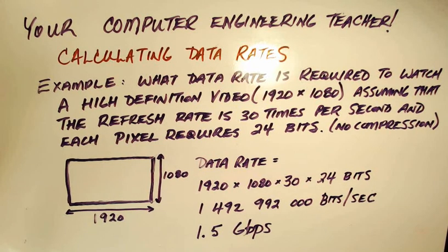So in order for this high definition video, this many pixels at a refresh rate of 30 times per second, remembering each pixel requires 24 bits, we're going to need a data rate of 1.5 gigabits per second to make this happen.